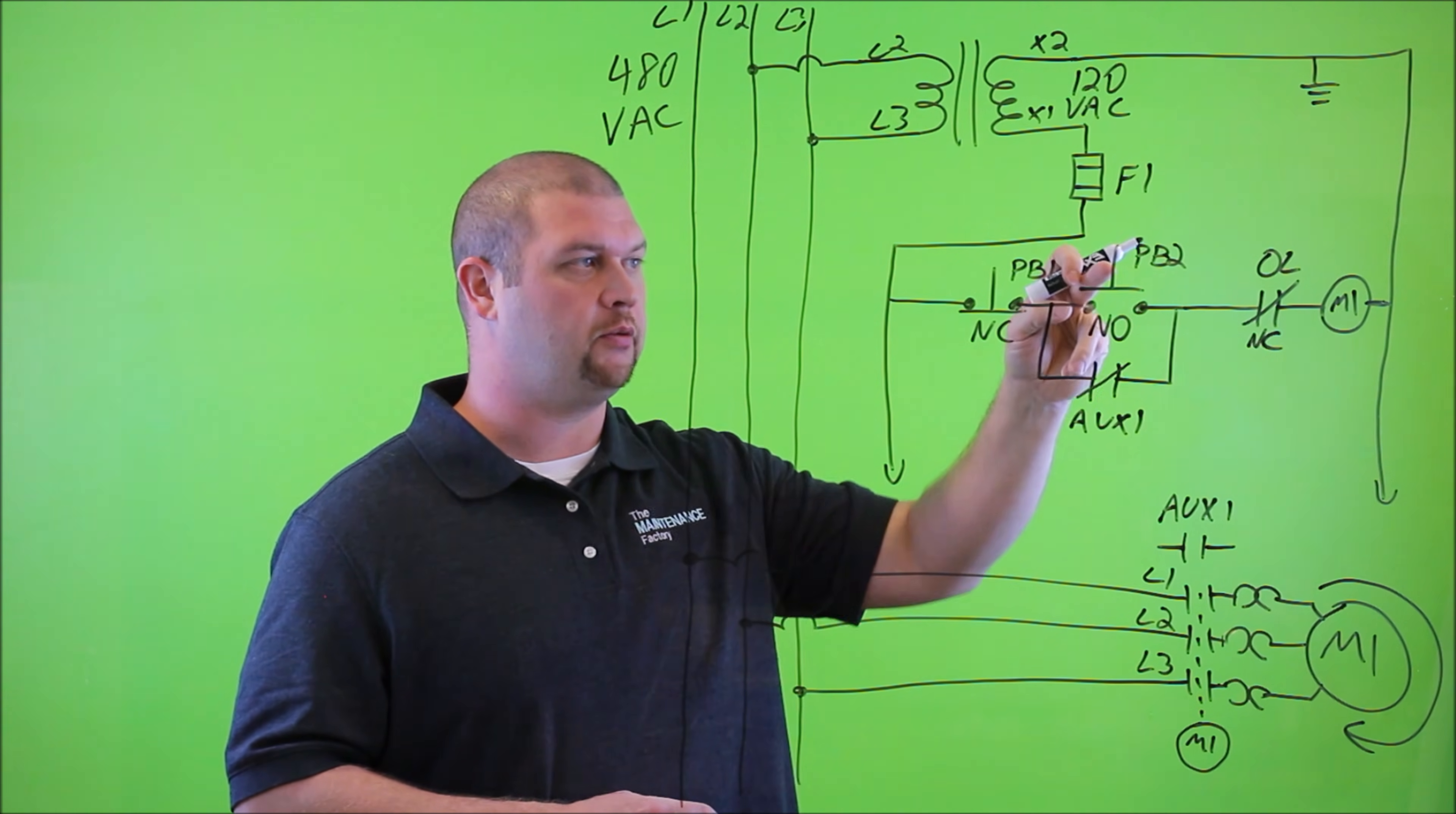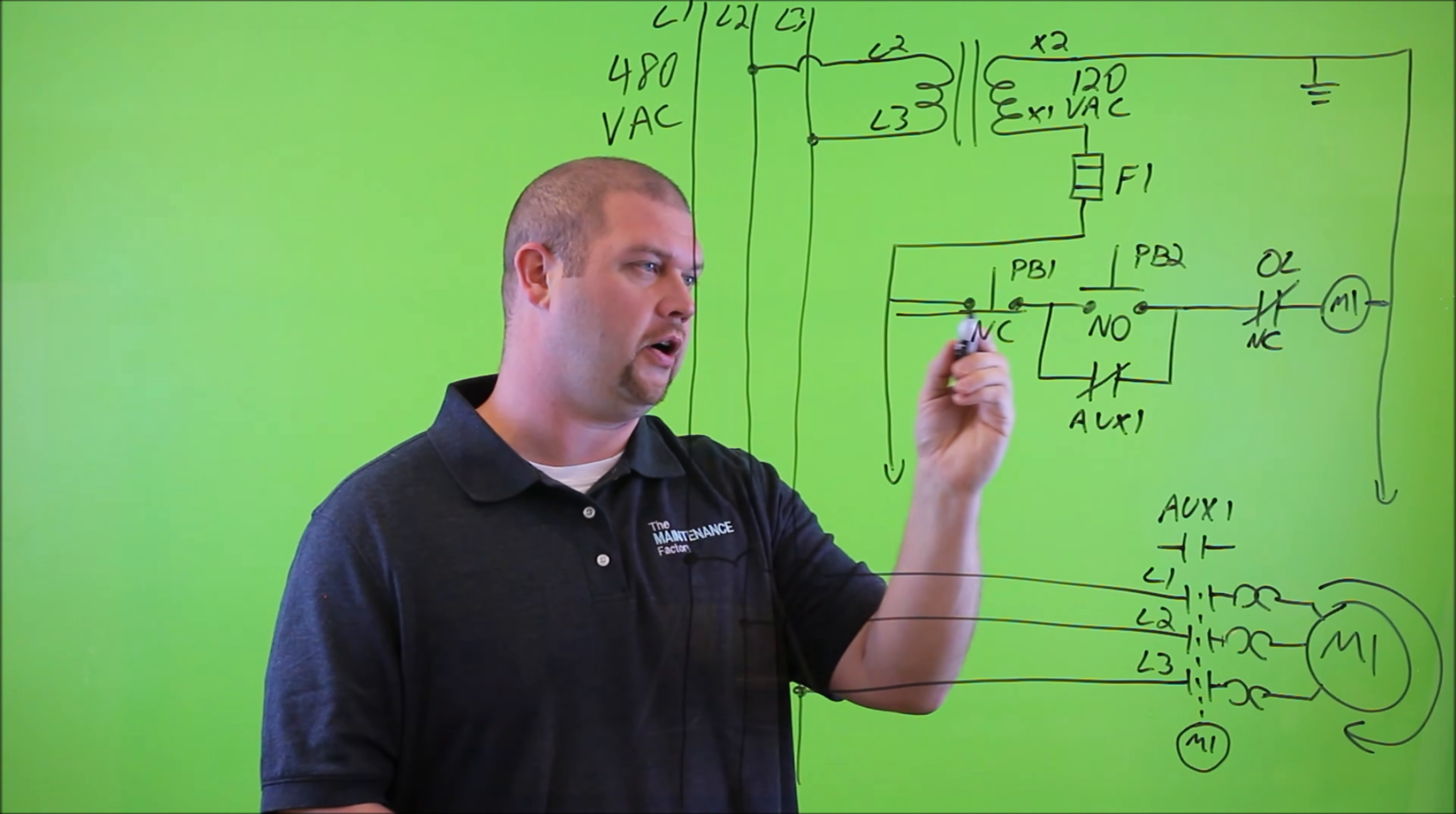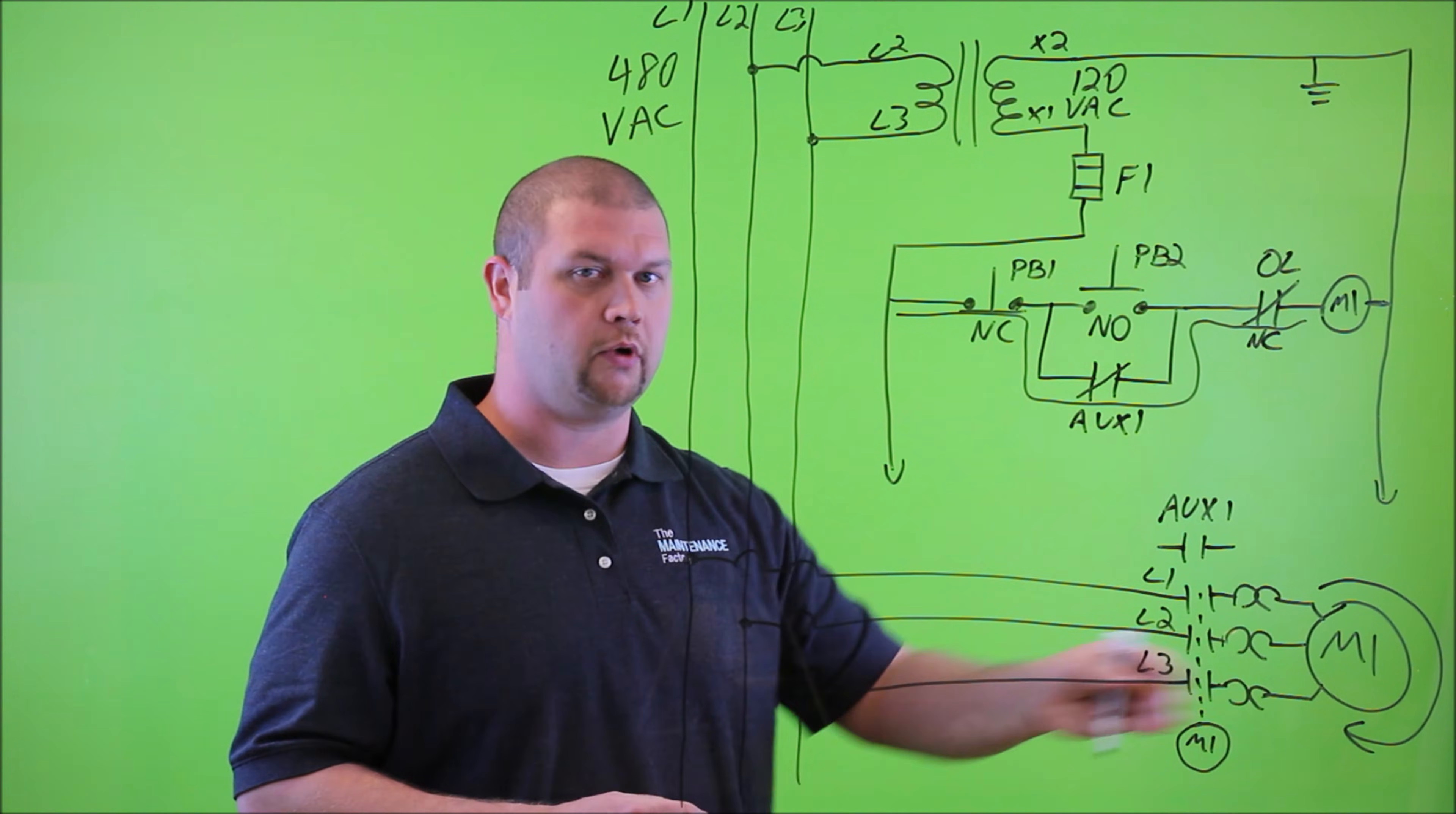And now, as we release the start button, this auxiliary contact provides that path for current to flow. So now, current is going to flow in this direction to the coil, keeping the coil energized, therefore keeping the contactor closed, and continuing to rotate the motor.